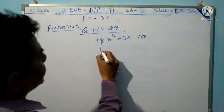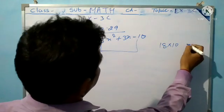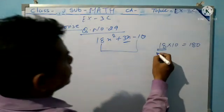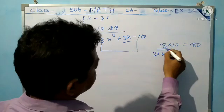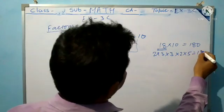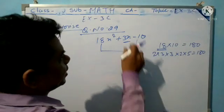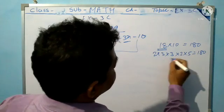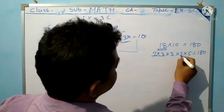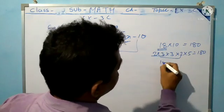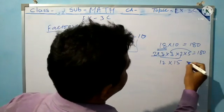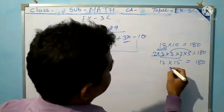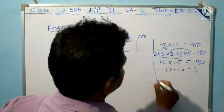So 18 into 10 equals 180. We need terms that add or subtract to give 3x. That is 2 × 3 × 2 equals 12, and 3 × 5 equals 15. So 15 minus 12 equals 3, which means that term is factorized.